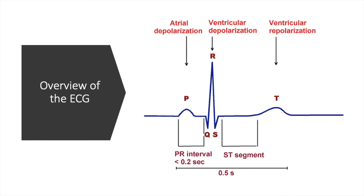The QRS spike is a lot bigger than the P wave because the ventricles are bigger and thicker. Anything that depolarizes also needs to repolarize, and repolarization is highlighted by the T wave, which specifically shows the ventricles repolarizing. As for the atria repolarizing, this is actually another spike but it is hidden underneath the QRS complex, which is why you can't see it, although it is there.